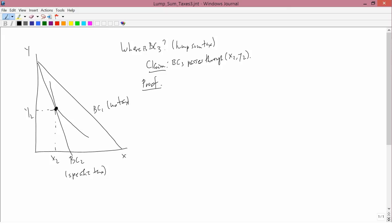The setup we have is BC1, the budget constraint with no tax, and BC2 is a specific tax budget constraint. At BC2, the consumer goes to X2, Y2.